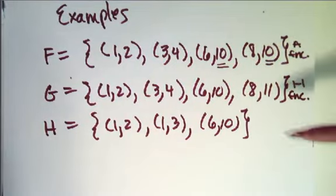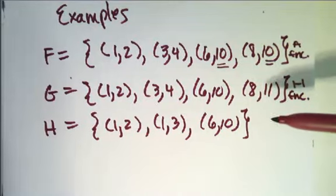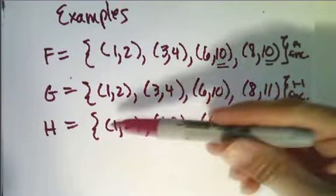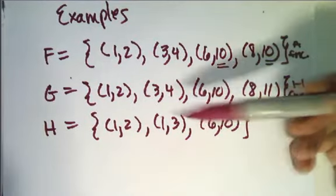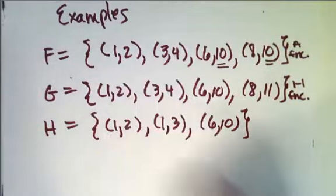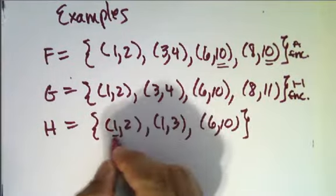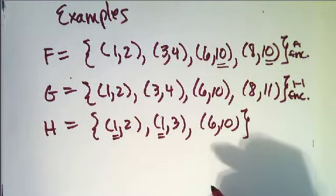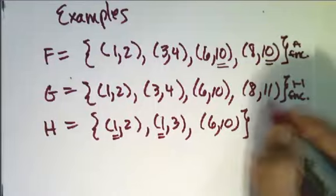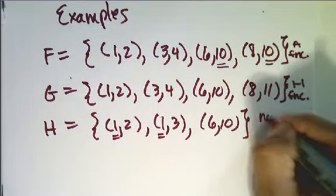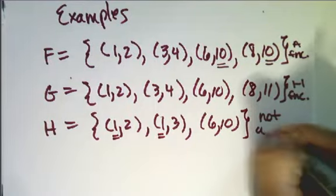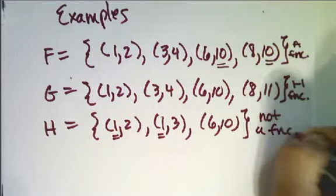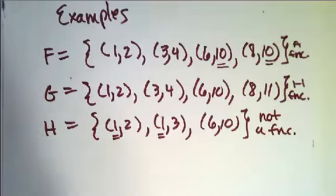Lastly, look at H: (1,2), (1,3), (6,10). Immediately I see I have a first coordinate — 1 — that has two second coordinates, 2 and 3. So this is not even a function, and since it's not a function, it can't be a one-to-one function.